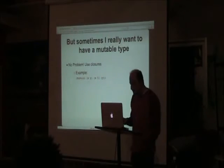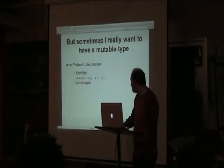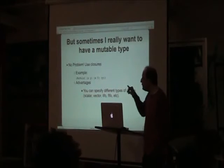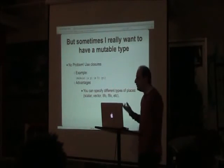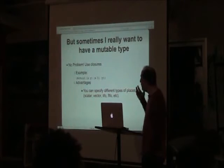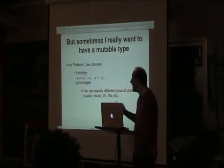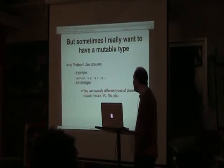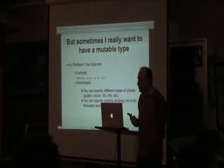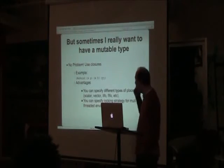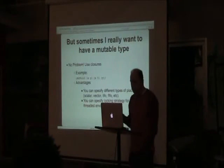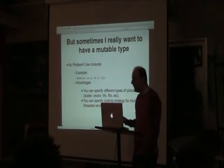There are advantages to handling mutability this way. You can think of these things as 'places' — different kinds of places. A regular mutable variable is just a scalar: set and get. But with functions you can do much more: vectors, LIFO variables, FIFO variables, stack variables. Importantly, in a multi-threaded Scheme you can also specify a lock policy for that variable — how you mutate it, what locks to acquire.